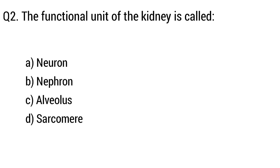Question 2. The functional unit of the kidney is called. Option A: Neuron. B: Nephron. C: Alveolus. D: Sarcomere. The right answer is Option B: Nephron.